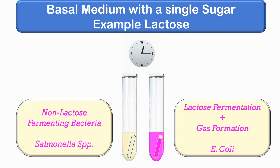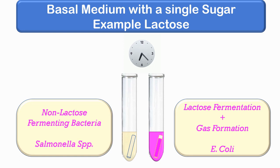No change in color is indicative of a non-fermenting bacterium for that particular sugar. An example is Salmonella species, which is a non-lactose fermenter. The same test can be repeated using different sugars.